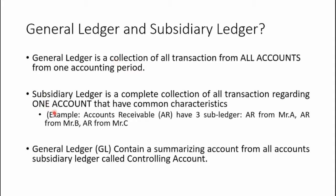From cash to all balance sheet accounts and all income statement accounts — all of those are compiled in the general ledger. On the other hand, subsidiary ledger is a complete collection of all transactions regarding only one account. The keyword here is 'one account.' A common example of subsidiary ledger is the subsidiary ledger for accounts receivable. For example, a company may have three subsidiary ledgers for accounts receivable: receivable from Mr. A, receivable from Mr. B, and receivable from Mr. C.